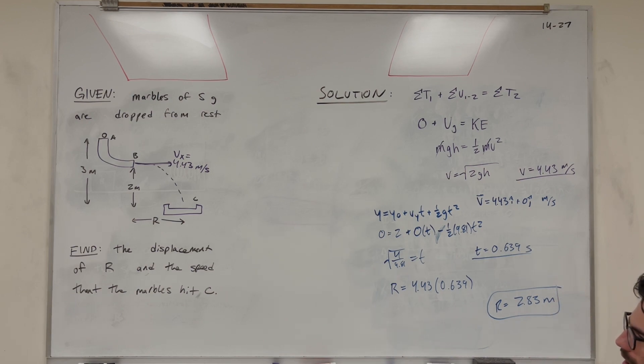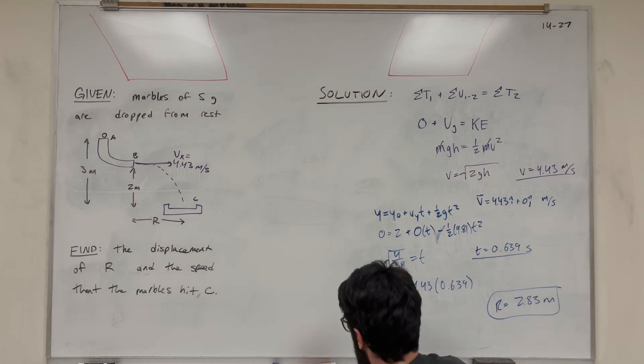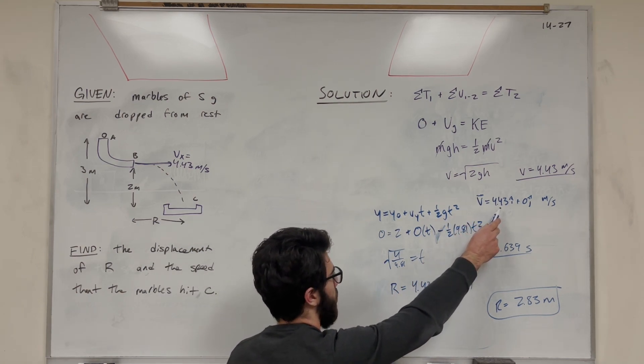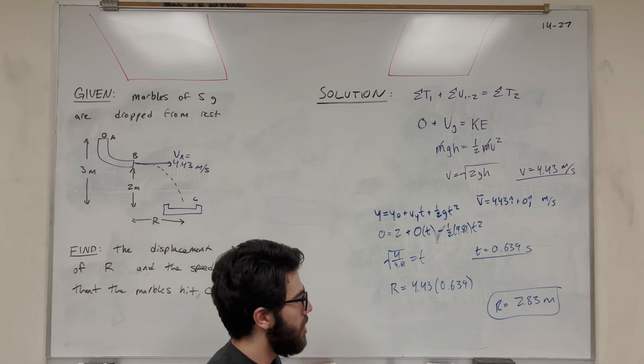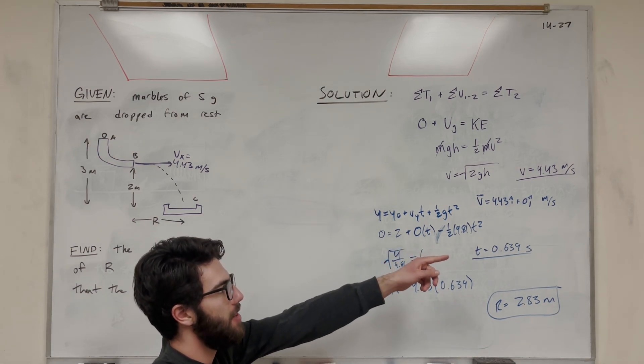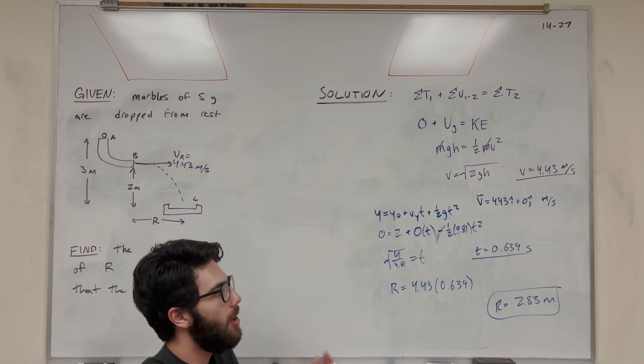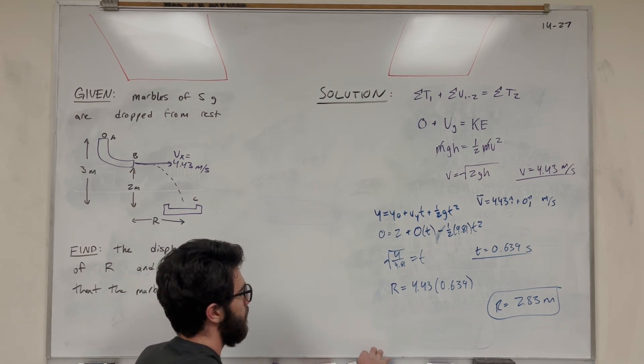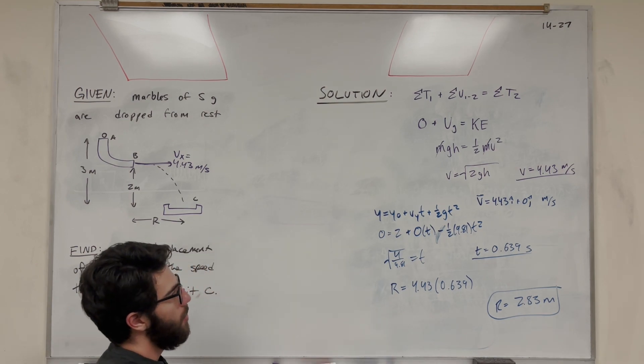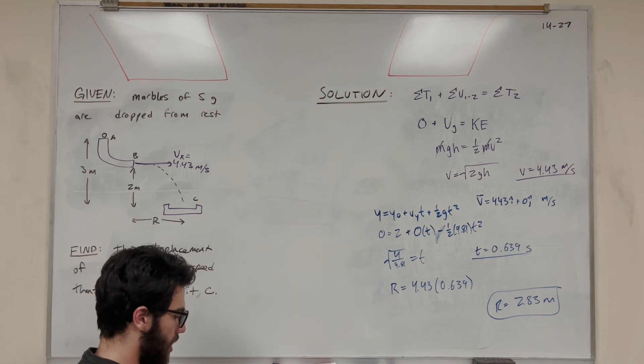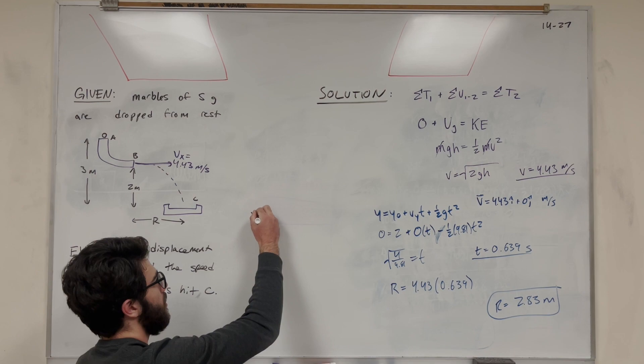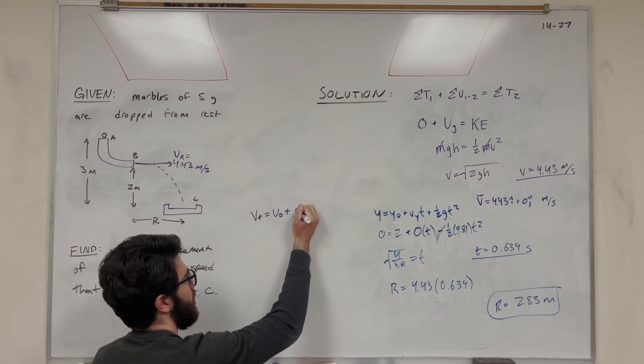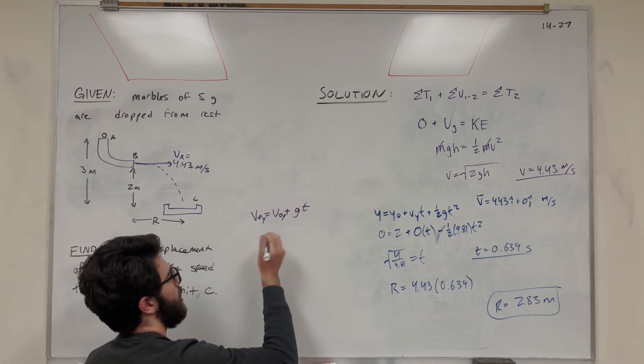So we found our answer. Now we just need to find the speed of the marbles when they hit C. We know that the velocity in the x direction when it falls is 4.43 meters a second, and there's no acceleration in the x direction, so this velocity final is also going to be that. So all we need to find is basically the velocity in the y direction, and then we can find the magnitude. So how are we going to do that? Let's use the equation velocity final equals velocity initial plus acceleration time, which in this case acceleration is going to be gravity. We're looking in the y direction.